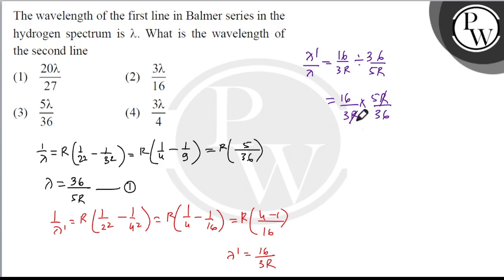R cancels. Simplifying, 16 becomes 4, and 36 becomes 9, giving us 20 by 27. So lambda dash is equal to 20 lambda by 27, which is option 1. I hope you understood the solution. Thank you.